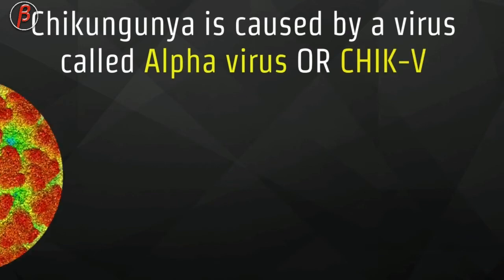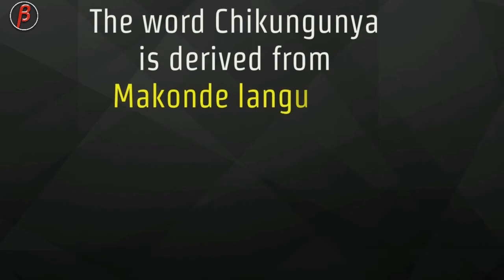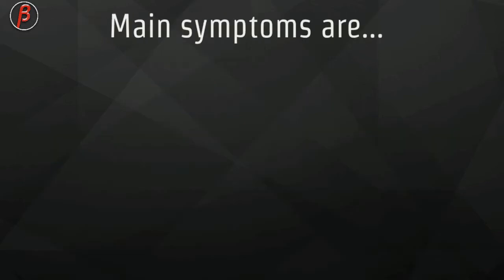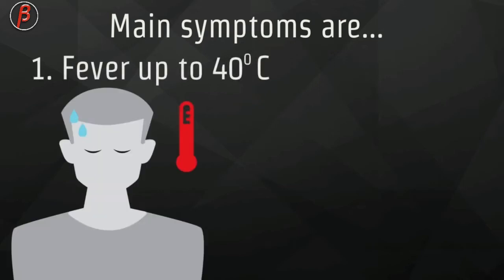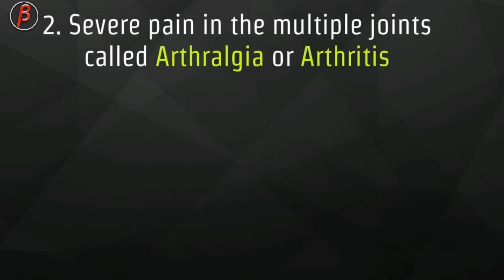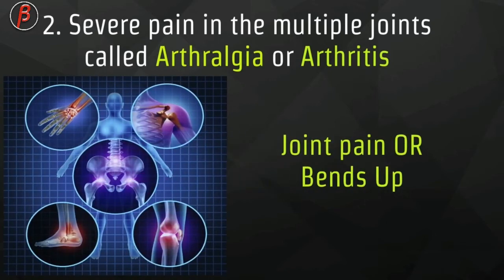Chikungunya is caused by a virus called alpha virus. The word chikungunya is derived from Makondal language of Mashonaland in Zimbabwe, which means 'bends up.' The main symptoms are: the person suffering from chikungunya gets a fever up to about 40 degrees Celsius, along with rashes on the trunk region, occasionally on the limbs, and pain in multiple joints called arthralgia or arthritis.